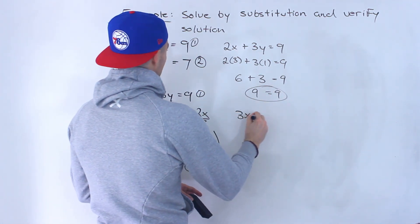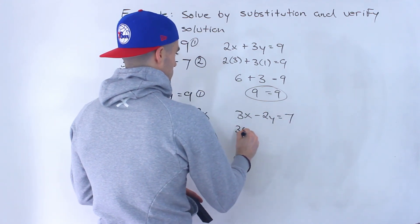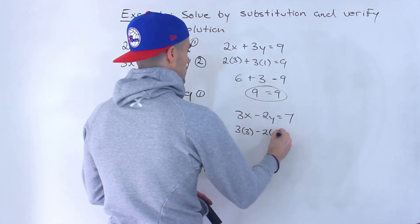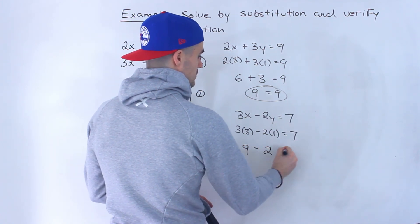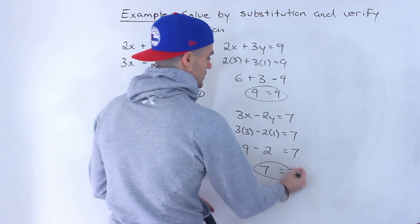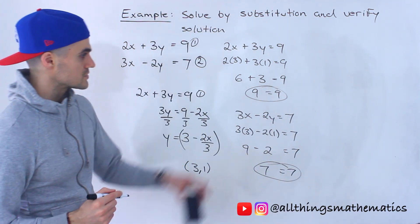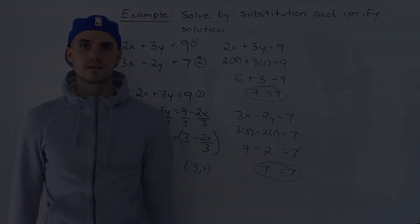The other line, 3x minus 2y equals 7. We'll have 3 times 3 minus 2 times 1. 3 times 3 is 9. 2 times 1 is 2. 9 minus 2 gives us 7. So notice here, left side equals right side as well. So we verified it with both lines, 3 and 1, that is the answer.